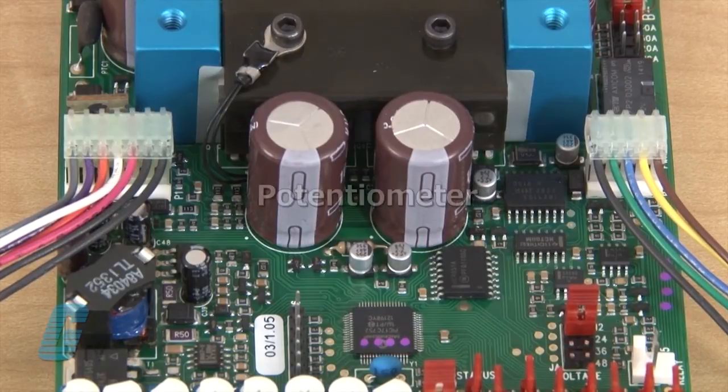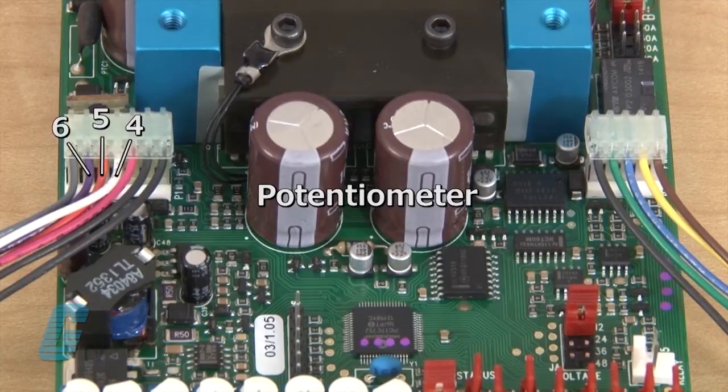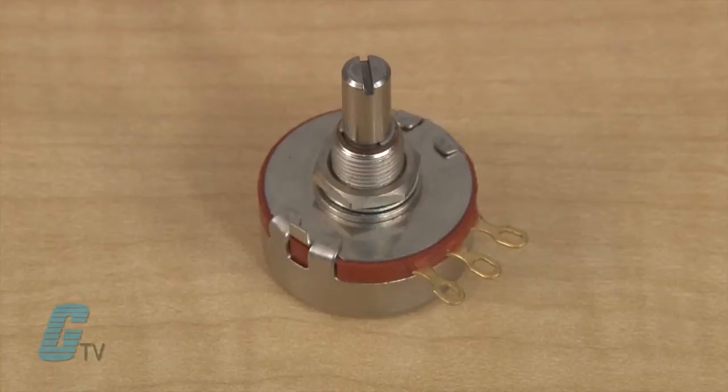For installing a potentiometer, I will wire it to numbers 4, 5 and 6 with white being the low on 4, the orange being the wiper on 5, and the violet being the high on 6. The potentiometer should be a minimum of 5K ohms.